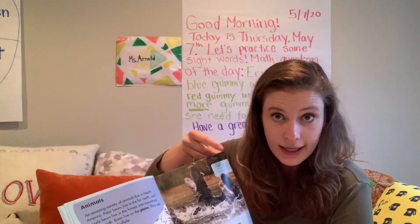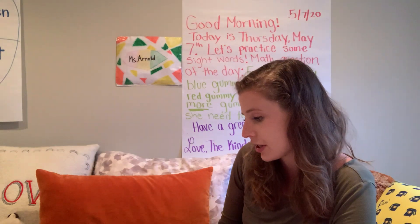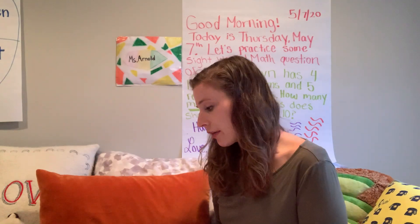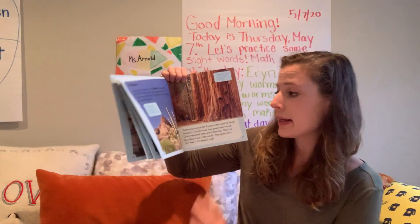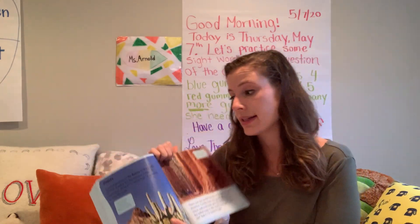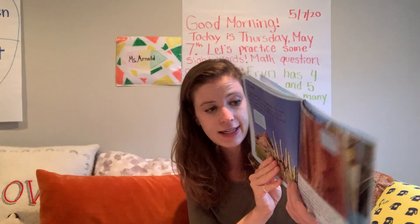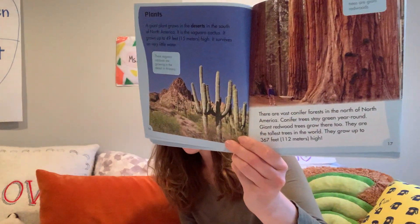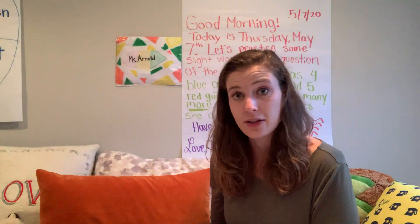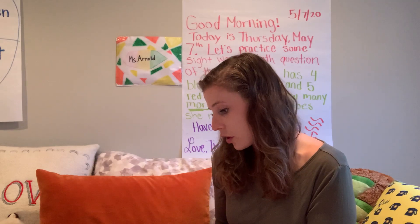Anything that you hear in the text, in the book, you can write on your chart if it is interesting to you or if you think it might be interesting to somebody else. Then we get to the section on plants, and you could write about cactuses under things to do because somebody might want to visit to see a cactus. You might also put something about the giant redwood trees under things to do. That is something you could add to your evidence organizer.